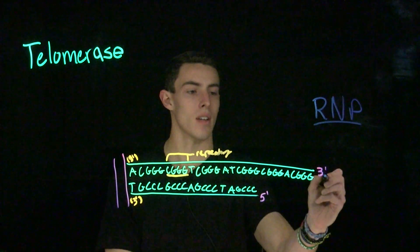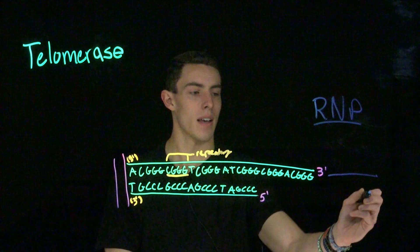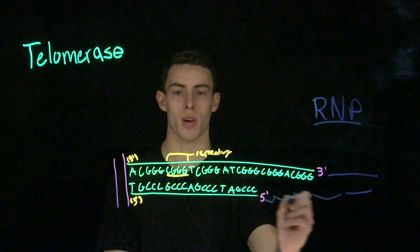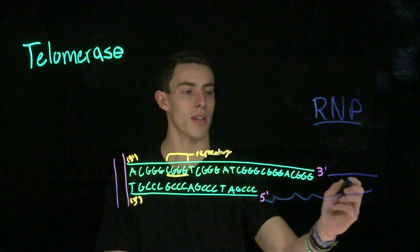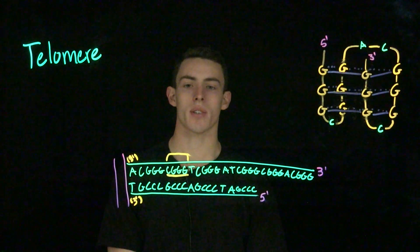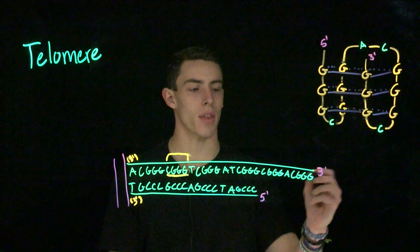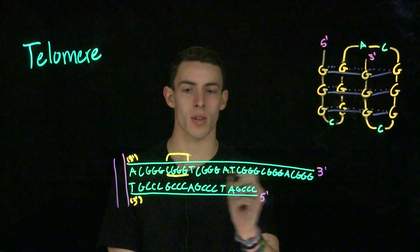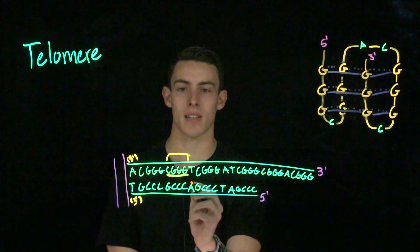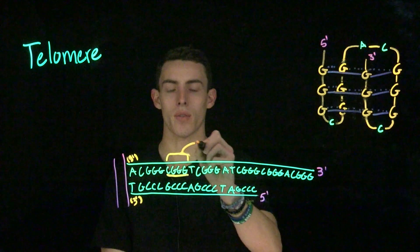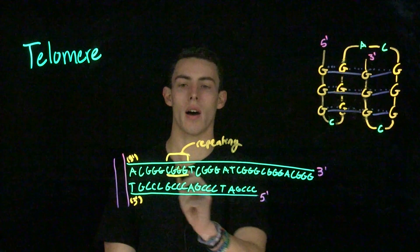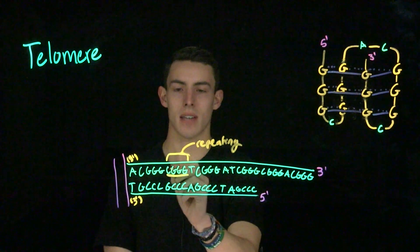Telomerase functions to extend the 3' overhang and then set a primer that is able to build back some of this 5' underhang. However, telomerase is not perfect in that it still will leave a little bit of an overhang at the end. A telomere is the end structure of linear DNA. Telomeres are made of a 3' overhang rich in guanine, and thus the underhang on the 5' end is rich in cytosine by complementarity. The G-rich nature of the overhang comes in repeating units of 4 nucleotides containing mostly G.